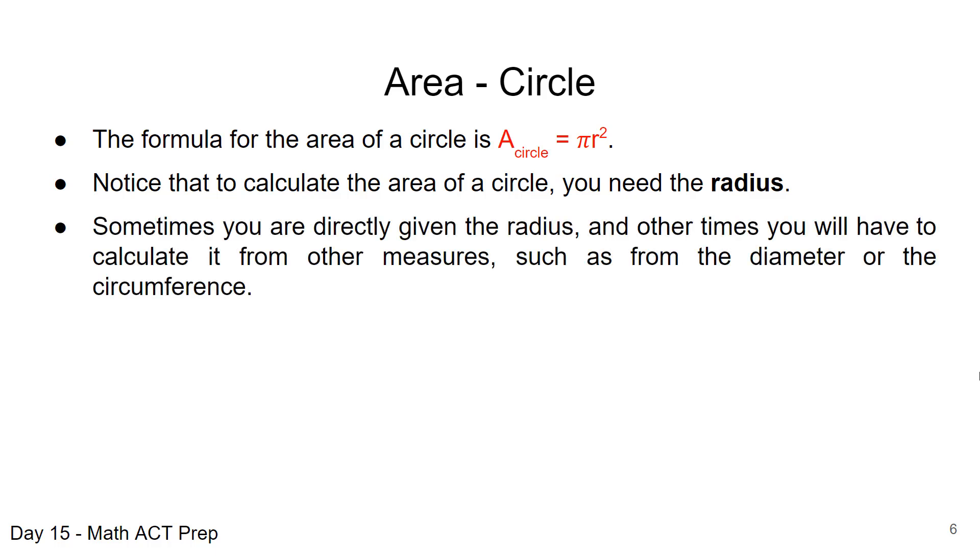Sometimes we're going to be given radius directly. Other times we have to calculate it from other measures, such as from the diameter, or we may be given the circumference, and we have to calculate the radius. We can do that, and we know that diameter is equal to 2r. And we know that circumference from the previous work is 2πr. So we are able to find the radius if we were given the circumference as well.